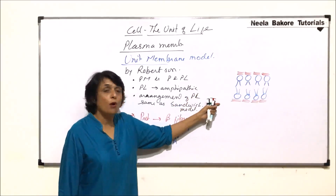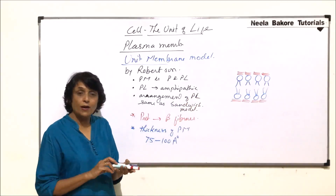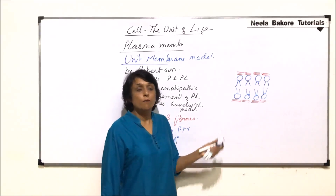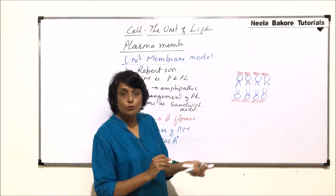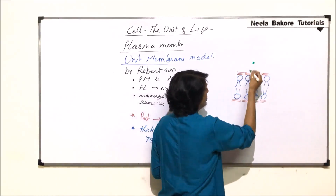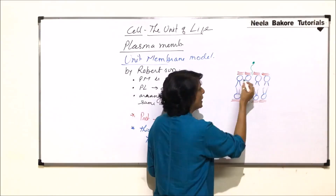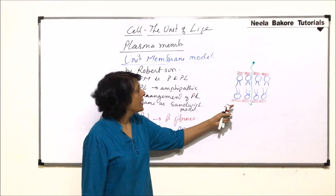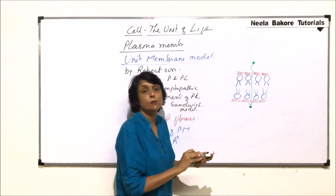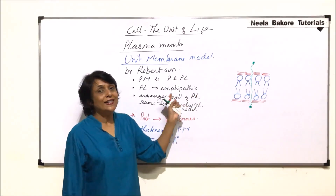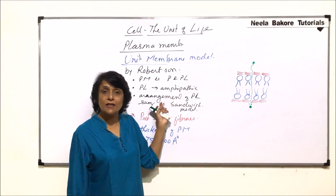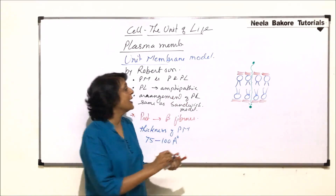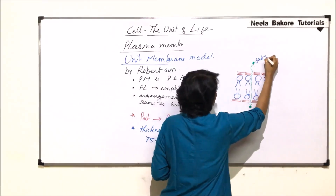Will this model be able to explain the properties? Let us check it on the basis of three properties. First, will it allow entry of fat-soluble substances? Fat-soluble substances can come through proteins, through heads, tails, and all layers. That means entry of fat-soluble substances is possible through this membrane, same as shown by Danielli-Davson's sandwich model.